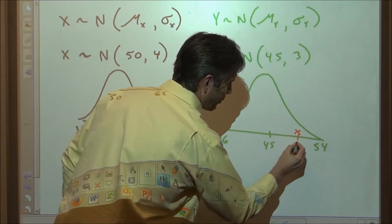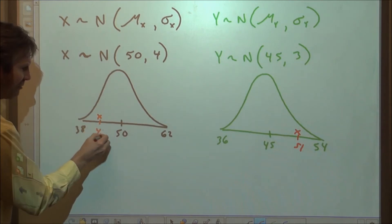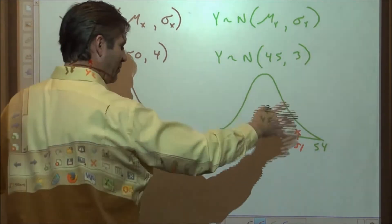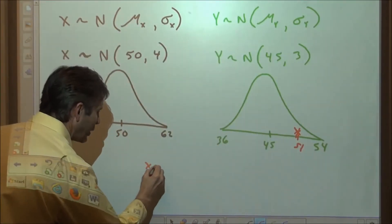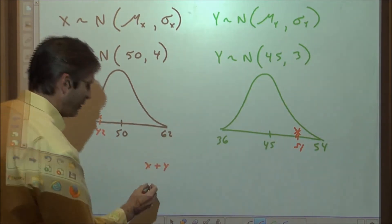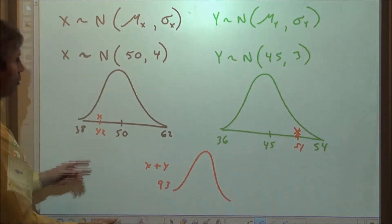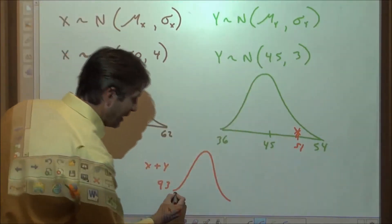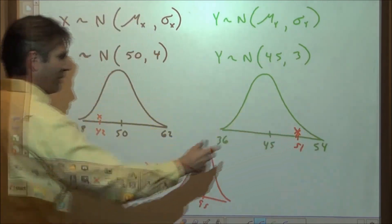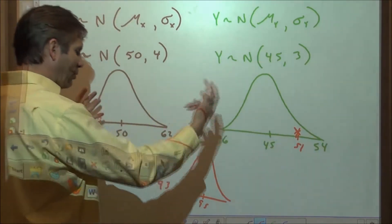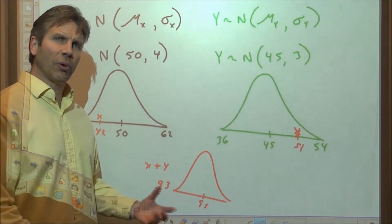To put numbers to it: suppose the seat time is 51, well above its mean of 45, and the mast time is 42, well below its mean of 50. When we add our x and our y we get 42 plus 51 equals 93. That's not far off from the joint distribution mean of 50 plus 45, which is 95. Even with serious fluctuations in both distributions, they counteract each other and the net result isn't that far from the joint mean.